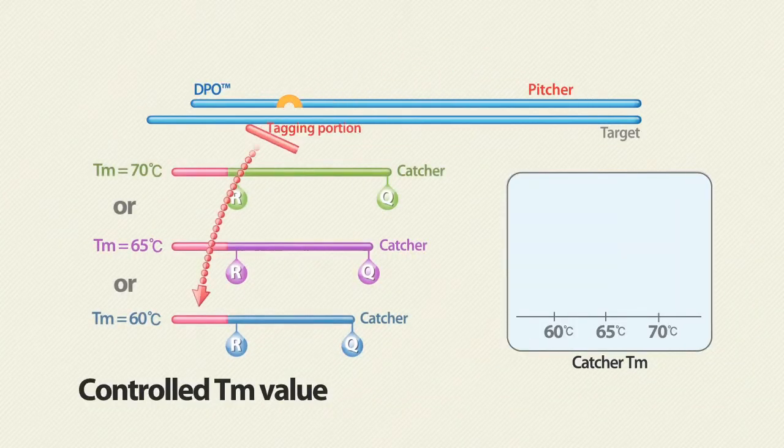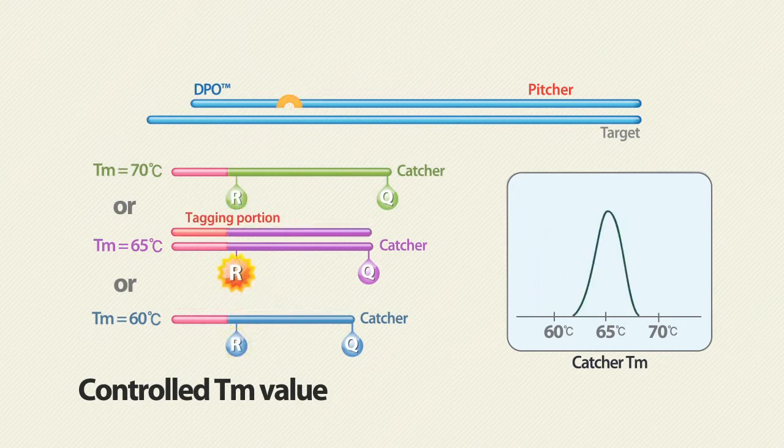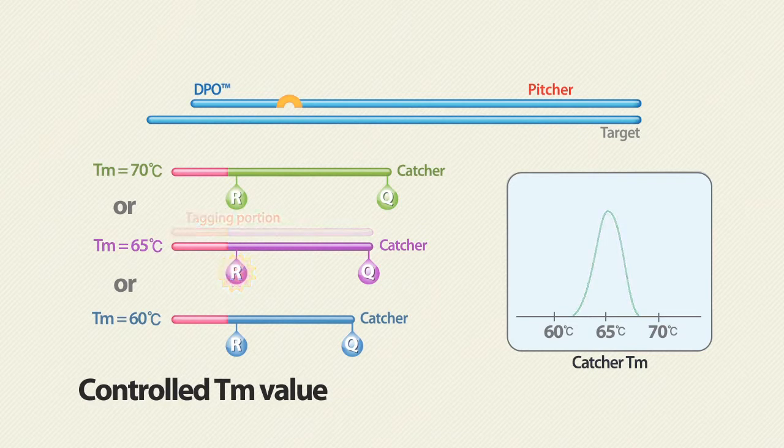The TM value can be controlled by adjusting the sequence and length of the catcher. This unique approach allows for a constant TM value that is not affected by sequence variations of the target sequence.